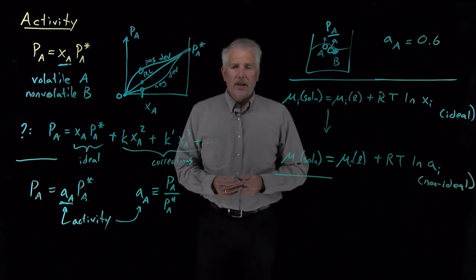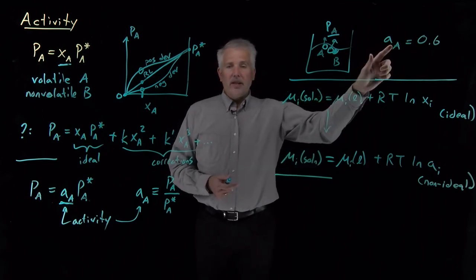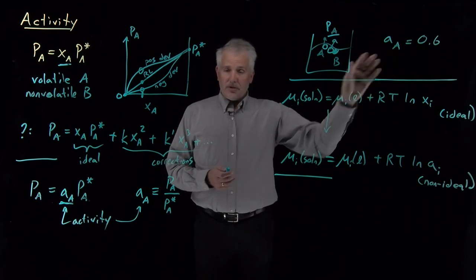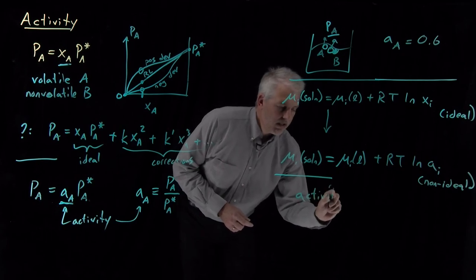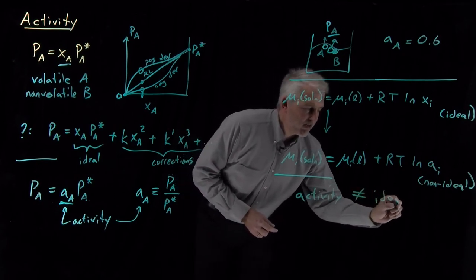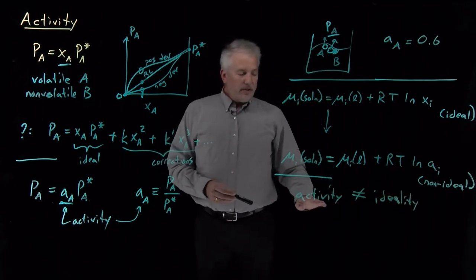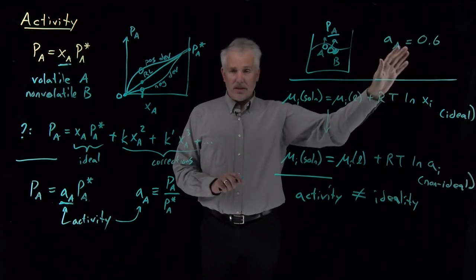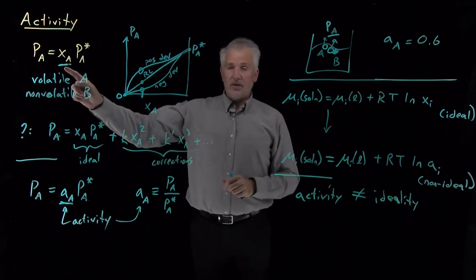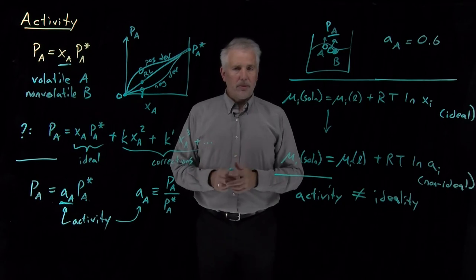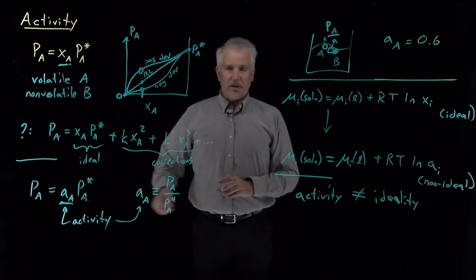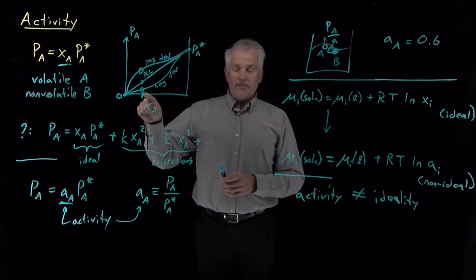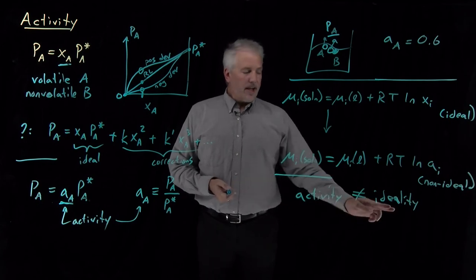One important caveat: it's a common but incorrect mistake to think that activity tells us how ideal or non-ideal a solution is. If the activity is 0.6, it does not mean the solution is 60% ideal. What it means is that the solution behaves as if it were an ideal solution with a mole fraction of 0.6. Activity tells us something about the concentration — a wishful thinking version of concentration — rather than the ideality of the solution. We will explore a separate measure of ideality next.